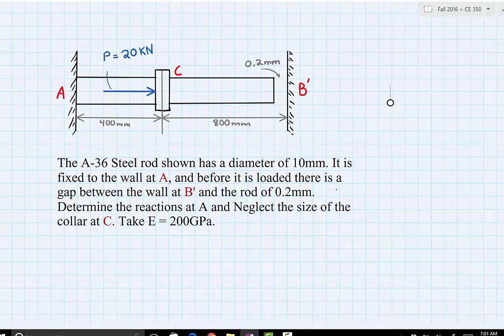We're going to use the superposition method to solve this problem. The problem statement says an A-36 steel rod shown with a diameter of 10 millimeters is fixed to the wall at A, and before it is loaded there's a gap between the wall at B prime and the rod of 0.2 millimeters. Determine the reactions at A and neglect the size of the collar at C.